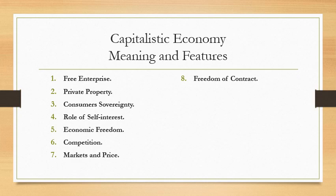The last feature of capitalist economy is freedom of contract. Under capitalism, people are free to make contracts and settle transactions. Every person is free to sell his goods and services to anyone according to his own choice. The state does not interfere in any way unless the transactions become illegal.